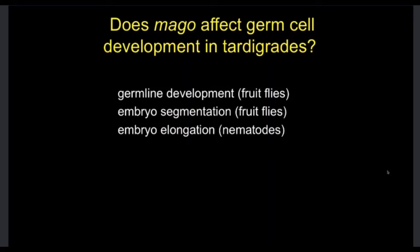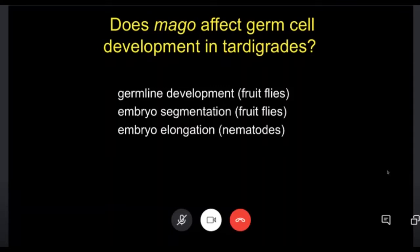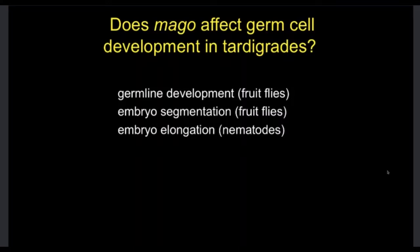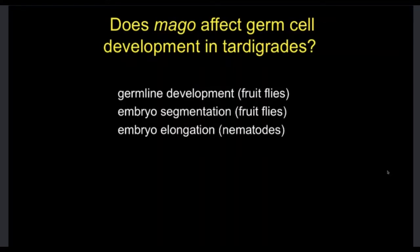In nematodes, they don't have segments, so we wouldn't expect MAGO to be required for segmentation. But in nematodes, it is required to elongate the embryo along a head-tail axis — the worm grows longer and longer, and that process seems to require MAGO. So since flies and nematodes are closely related to tardigrades, I can start to make predictions about what I would expect to observe in a tardigrade embryo if I were to knock out MAGO. The first thing I had to do was find MAGO in the tardigrade genome.